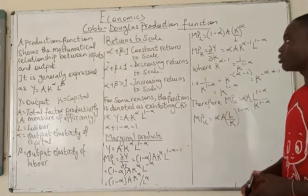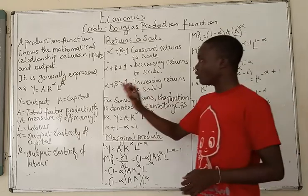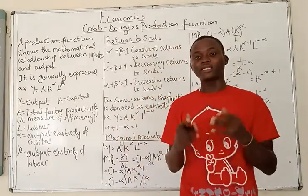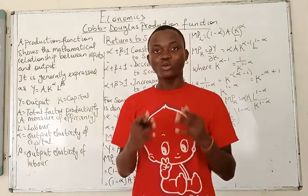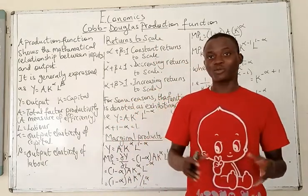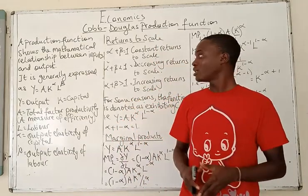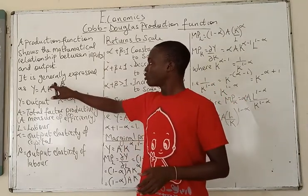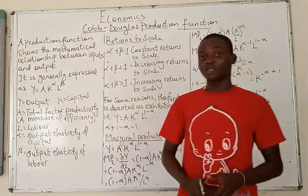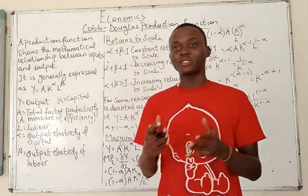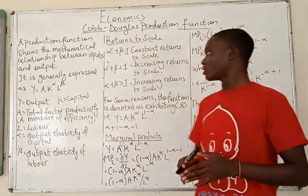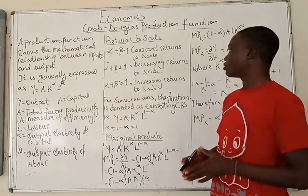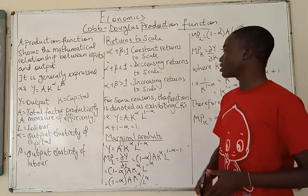One good thing about the Cobb-Douglas production function is that it enables us to know the returns to scale as simply as possible. That is simply obtained when we sum up the values of alpha and beta. When we sum them up, they give different results, and those results have different meanings with respect to returns to scale.